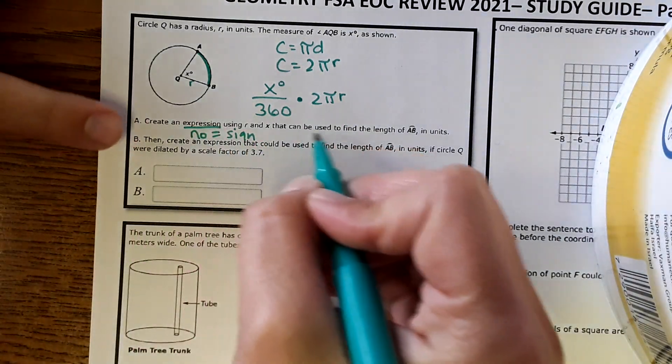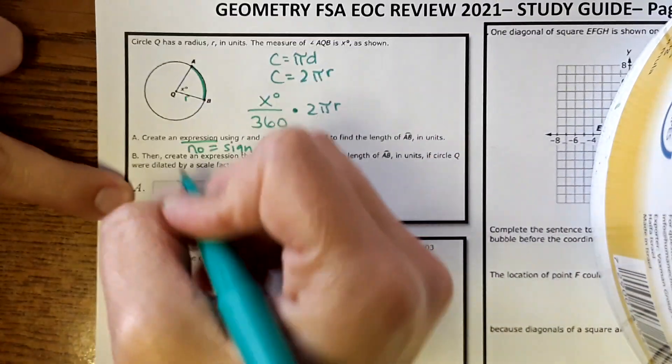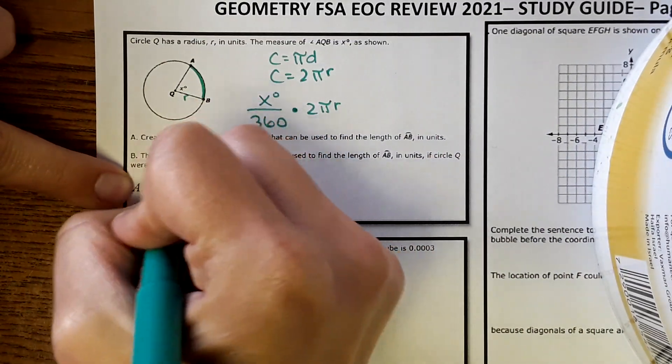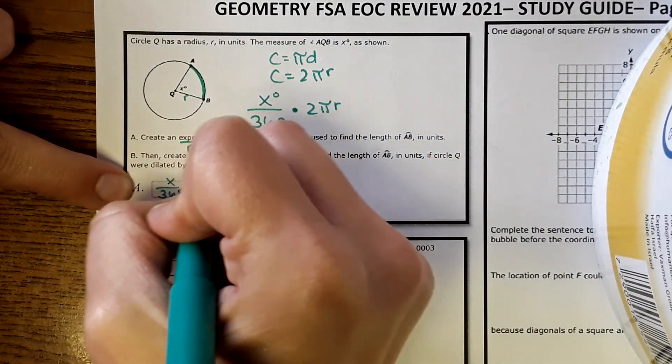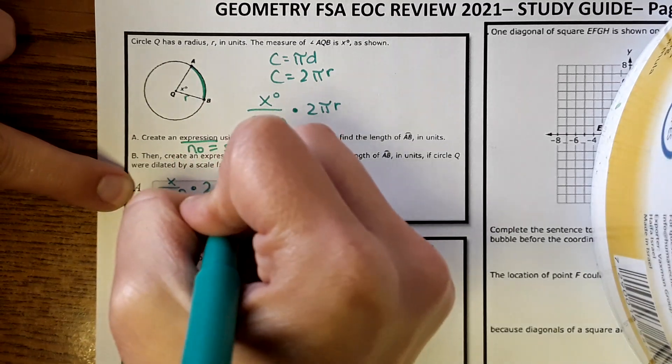And that's your answer to the first part. That is an expression using R and X that can be used to find the length of AB. So in this box, you would put in X over 360 times 2 pi R.